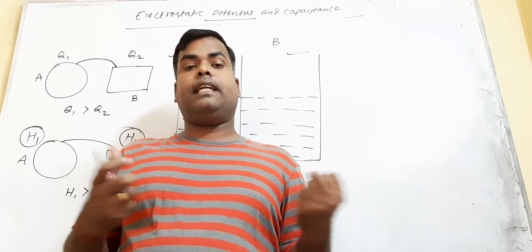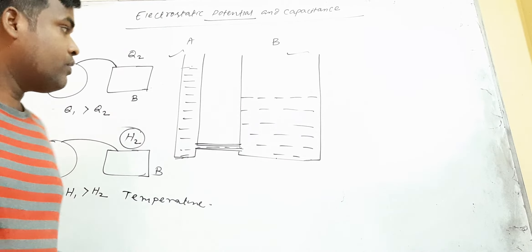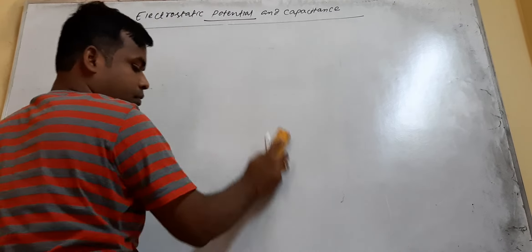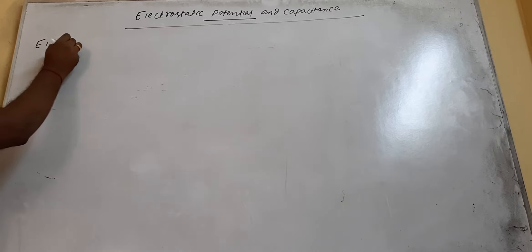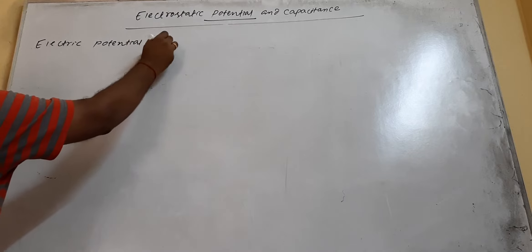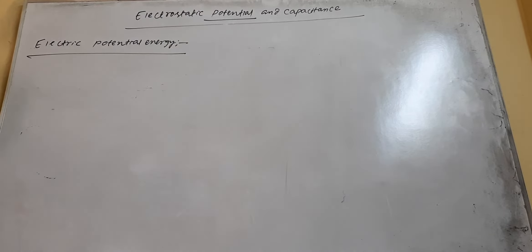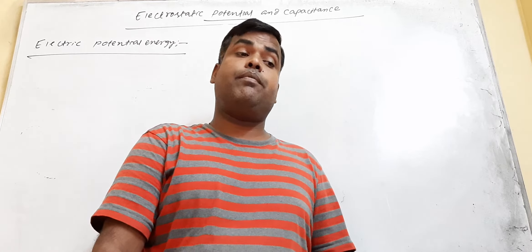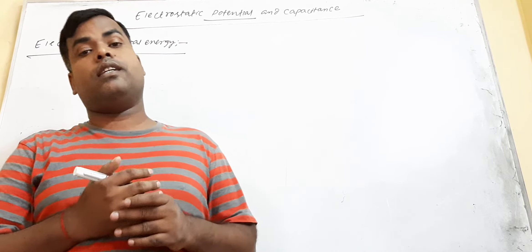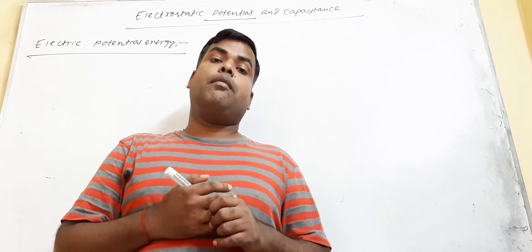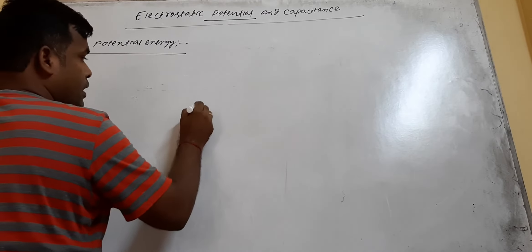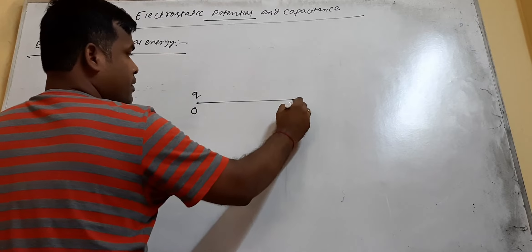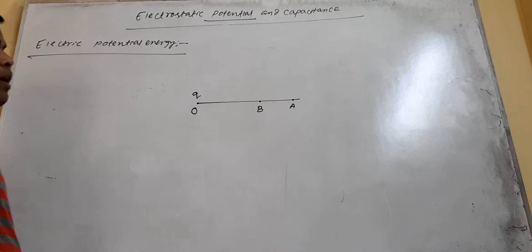Now come to the quantitative definition of electric potential. We will study electric potential energy. You know electrostatic force is a conservative force, and for a conservative force the change in potential energy is equal to the negative of work done by that force. Let us consider a point O where you have a source charge Q. A and B are two points in the electric field of this source charge Q.